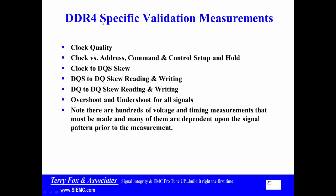When we look at DDR4 specific validation measurements, we've got clock quality, clock versus address, command and control setup and hold time. You've got clock versus the data byte strobe skew. You've got data byte strobe skew versus the DQ bits that are within that byte lane. You've got DQ to DQ skew when you're reading and writing, and overshoot and undershoot for all signals.